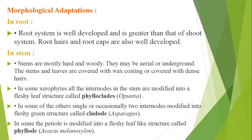In xerophytes, the internodes of stems are modified into fleshy green structures called phylloclade. In some other plants, occasionally one or two internodes are modified into fleshy green structures called cladode.